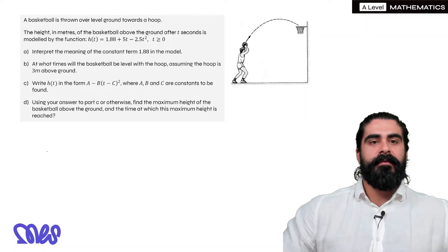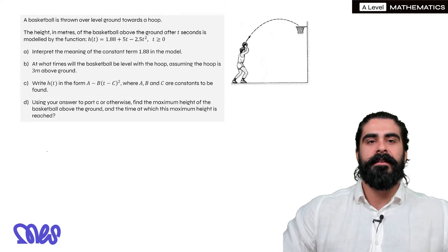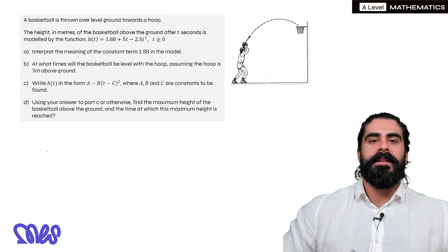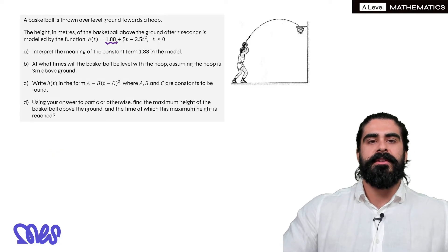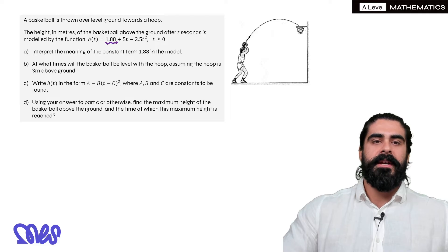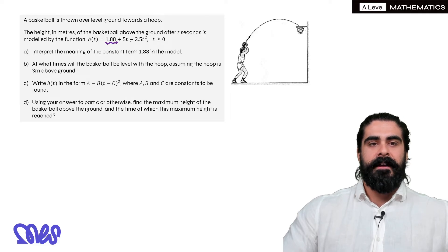The basketball is thrown over level ground towards a hoop. The height in meters of the basketball above the ground after t seconds is modeled by the function h equals 1.88 plus 5t minus 2.5t squared, where t is bigger than or equal to zero. Interpret the meaning of the constant term 1.88 in the model. Now 1.88 in the equation is the term independent of t. So you've got to think what t value would you have to substitute so that you get 1.88 on its own and that's t is zero.